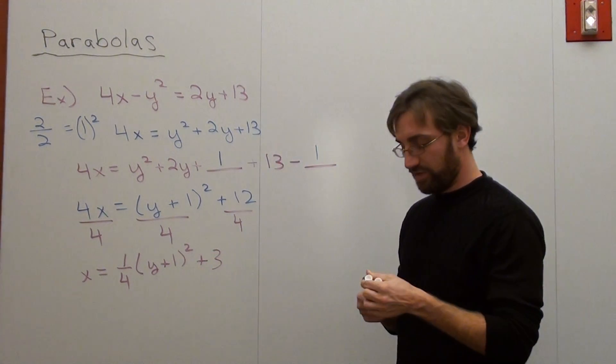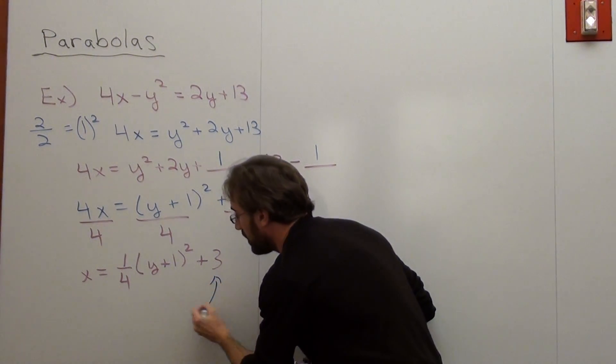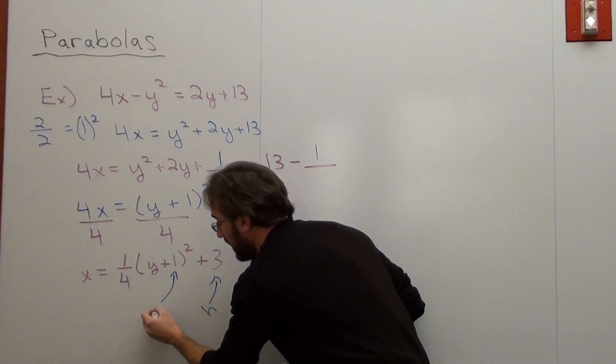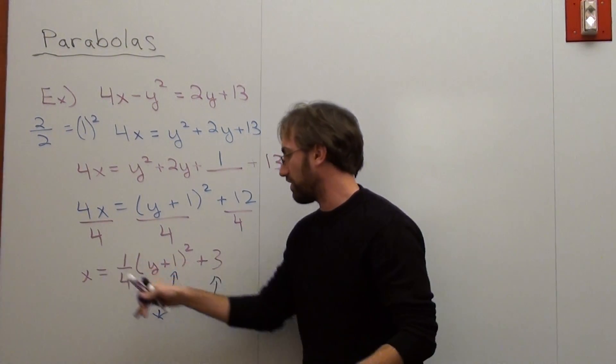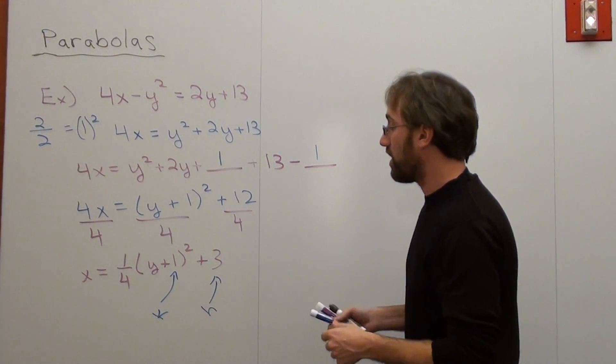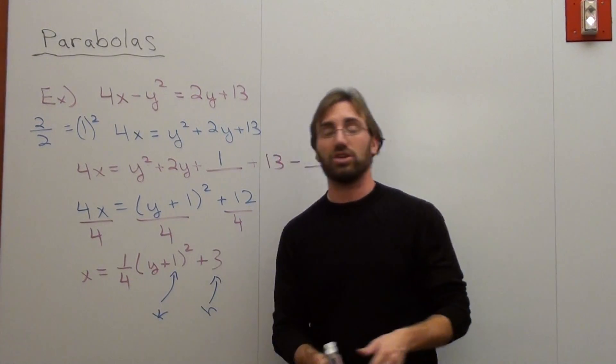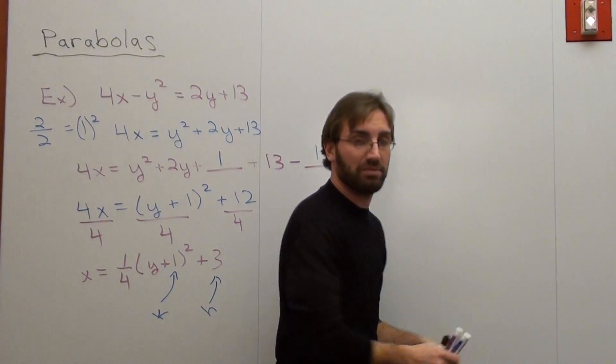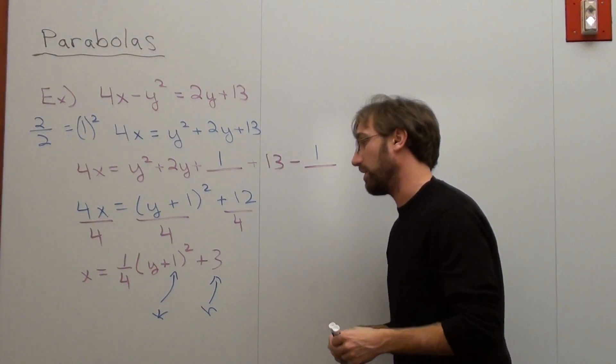One thing to be careful about, this is my h term, and this is my k term. Now, when we were solving for y, it was reverse, but when we're solving for x, that's how it goes. So keep that in mind when you're doing this problem. This problem is going to open up sideways, because I'm solving for x, and it's going to open up to the right, because it's positive. If it were negative, it would open up to the left.